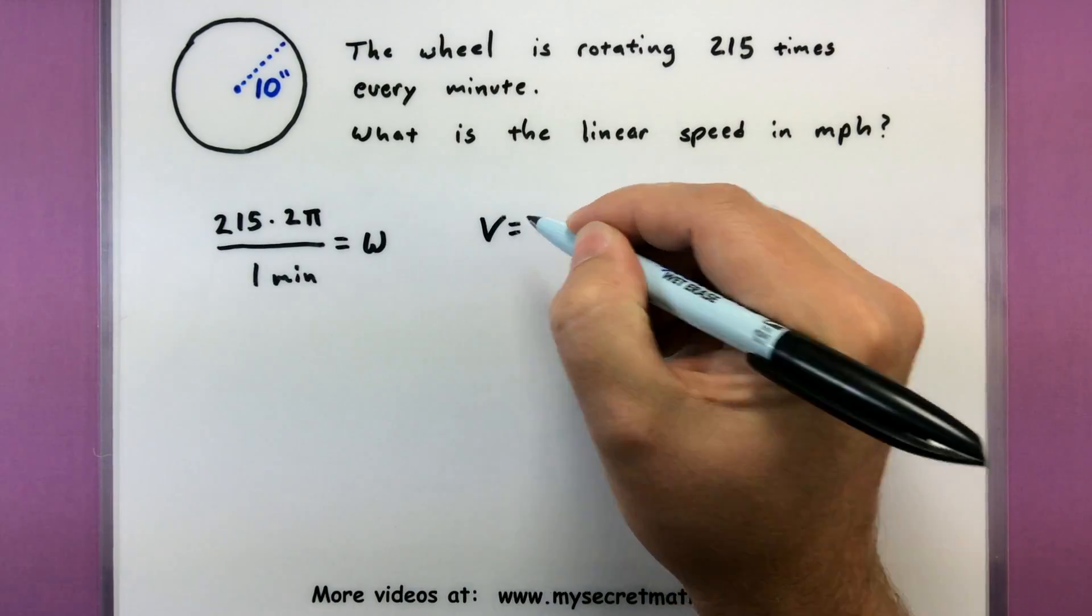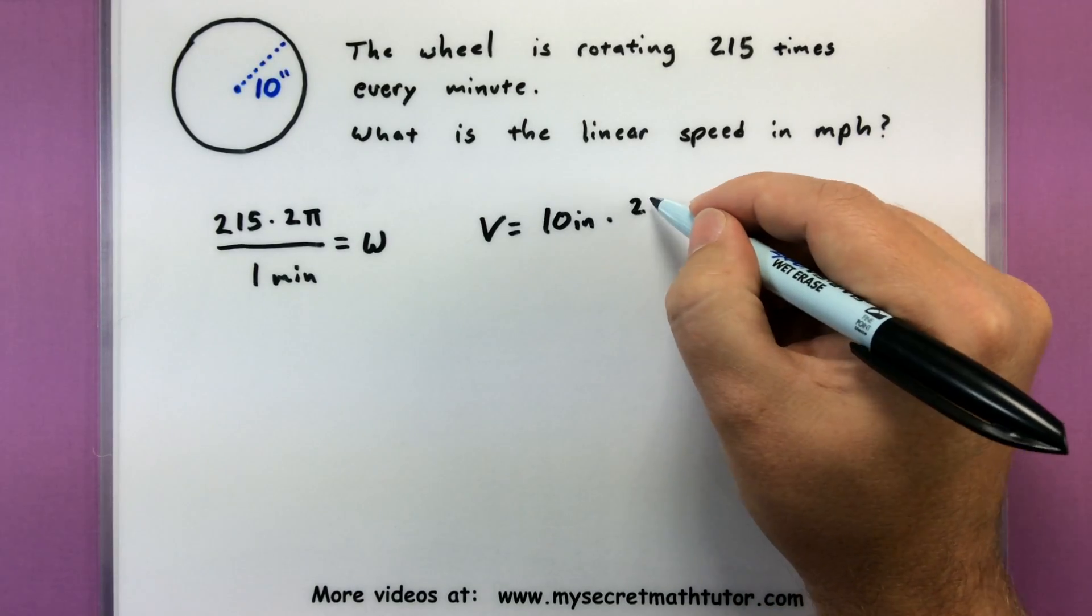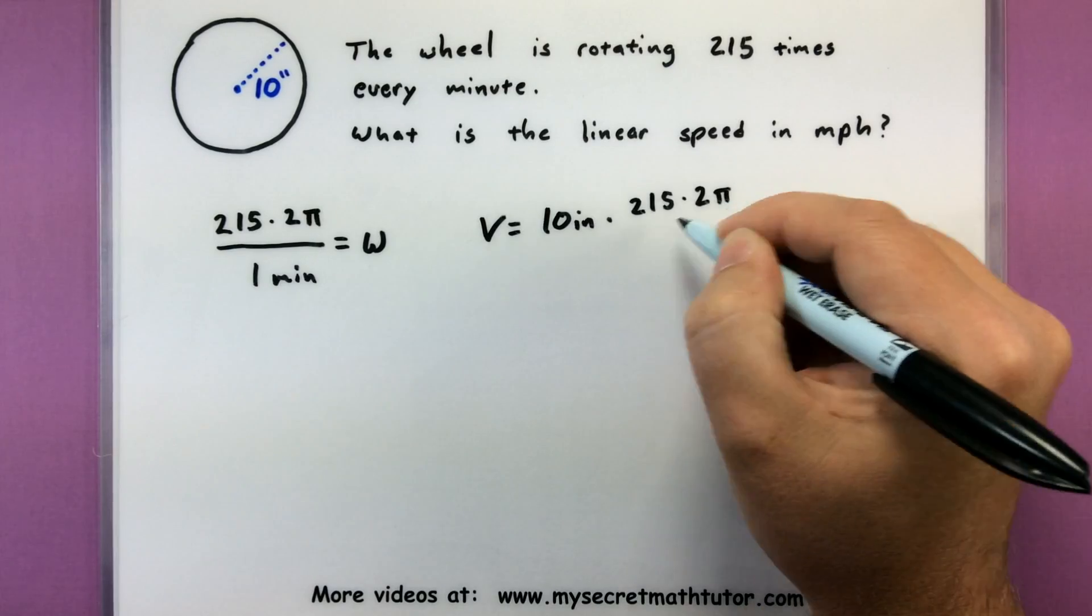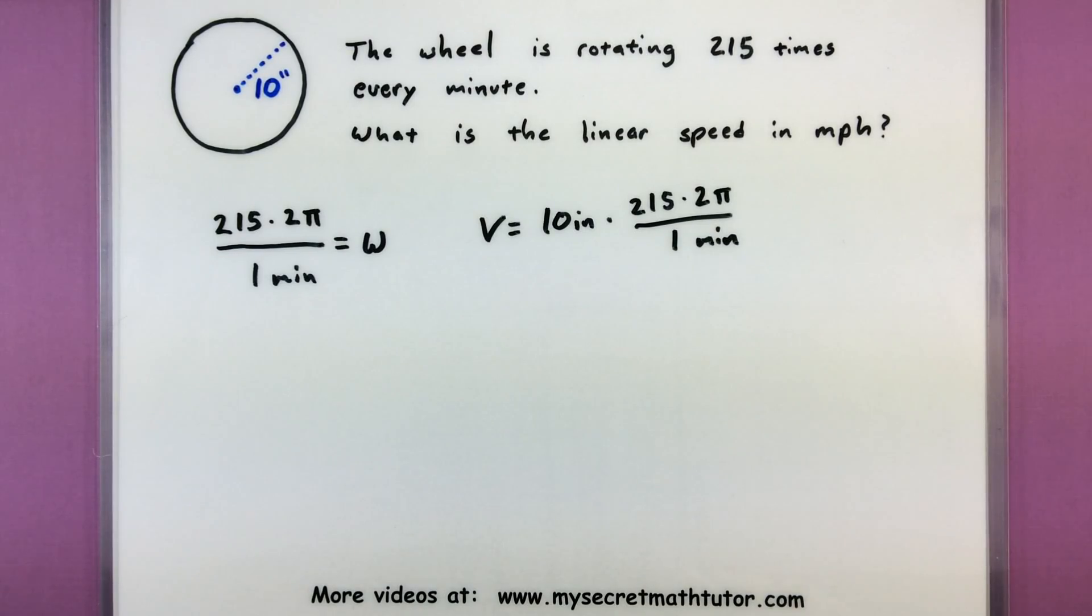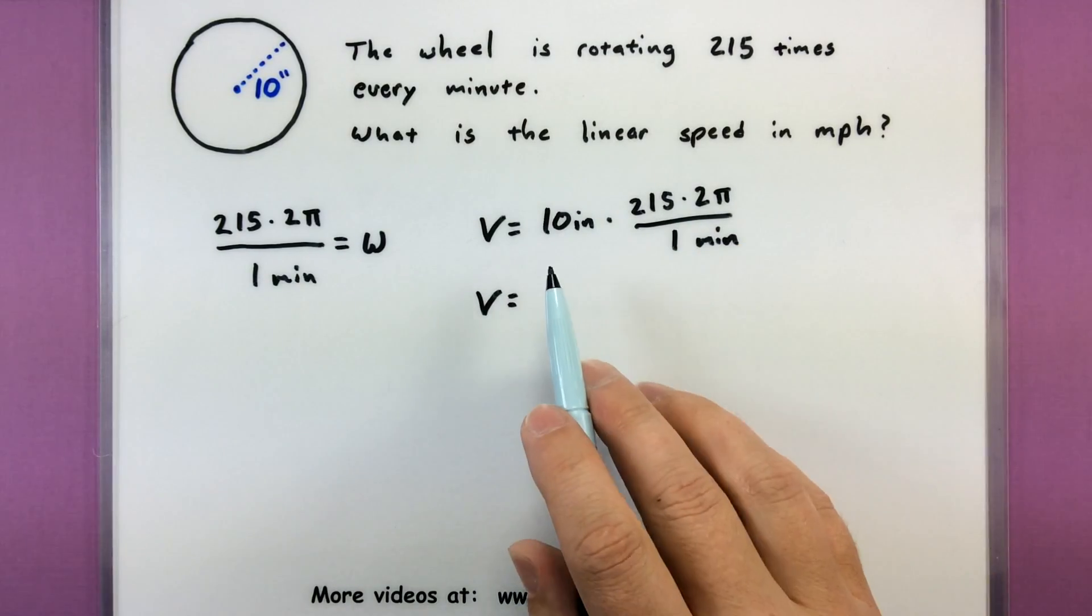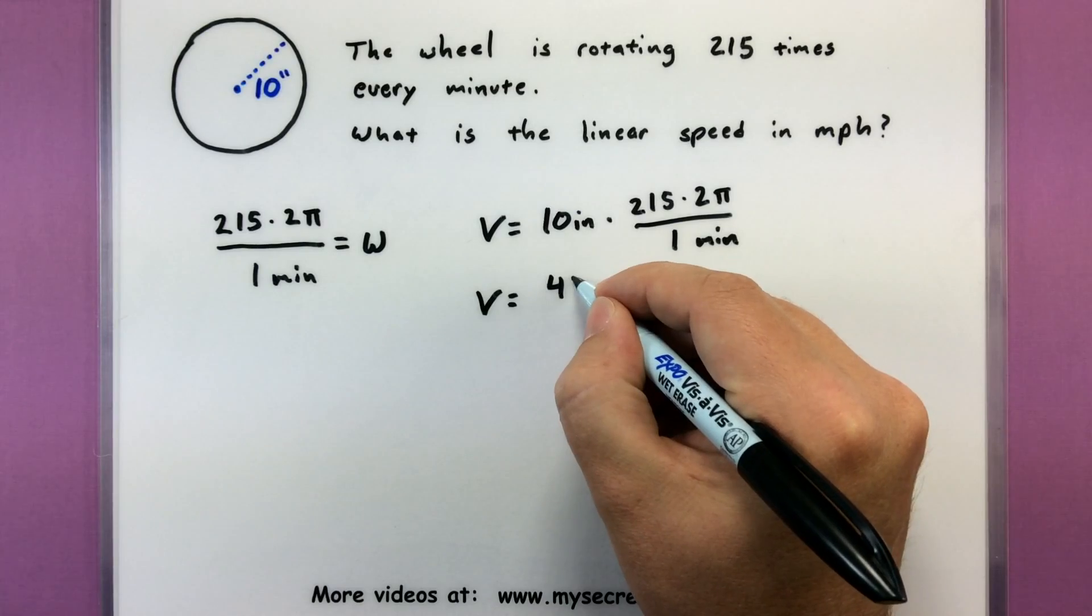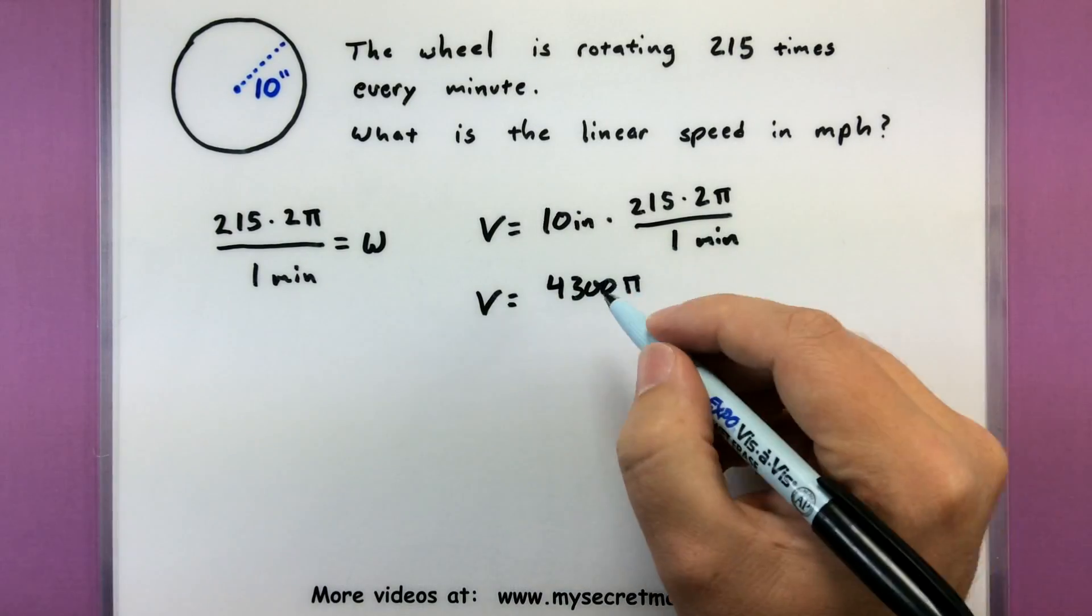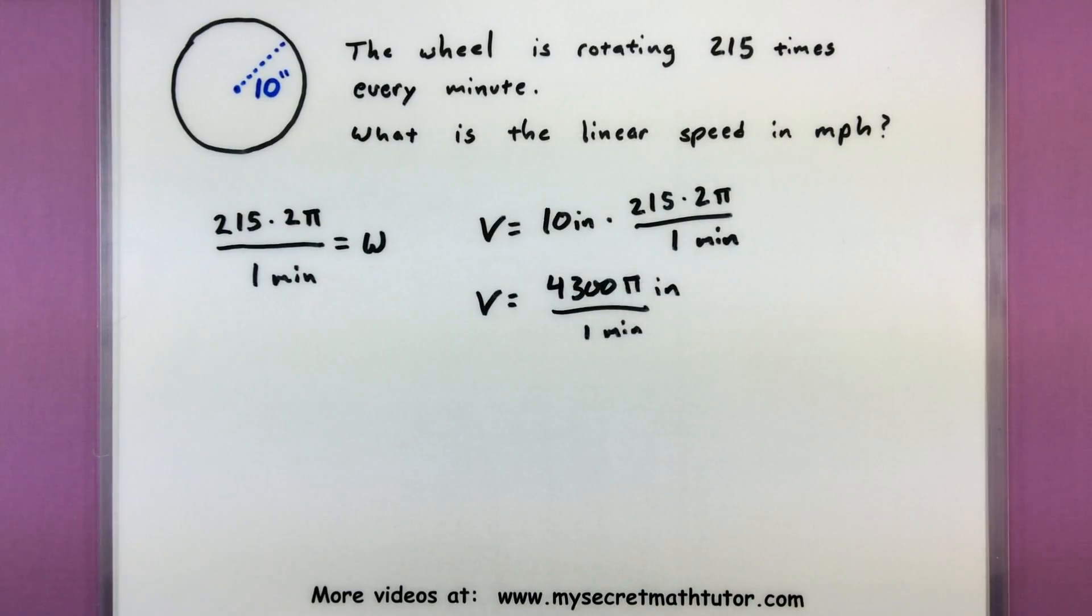So let's go ahead and drop things into our formula. So our velocity would equal our radius which is 10 inches multiplied by our angular velocity, 215·2π over one minute, and now I can multiply all these together and see what our linear speed is. So v equals let's see 10 times 215 times 2π, let's see according to my calculator 4300π all over one minute and this is in inches. Okay so that's a perfectly good linear speed. 4300π inches per minute.